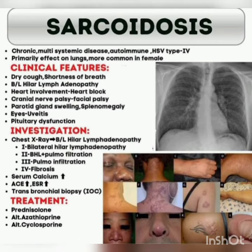Additional clinical features include splenomegaly, uveitis, and pituitary dysfunction. For investigations, chest X-ray is key: Stage 1 shows bilateral hilar lymphadenopathy.